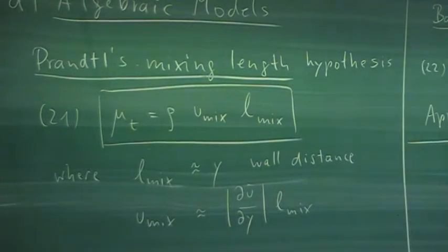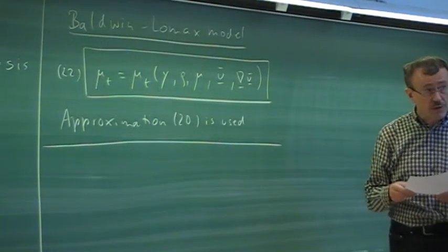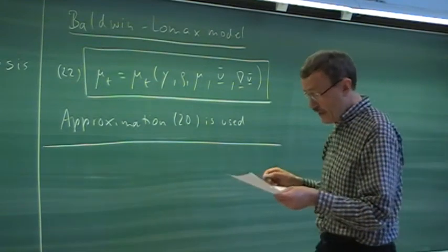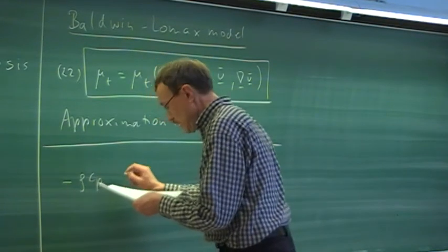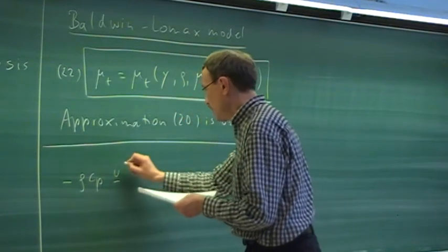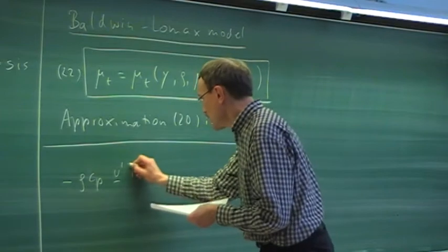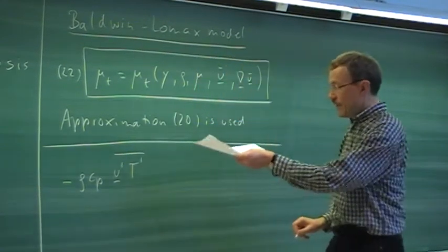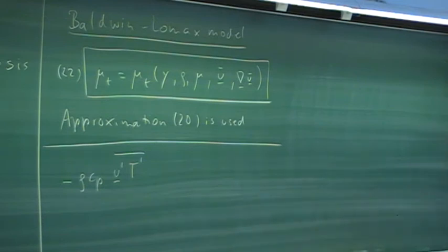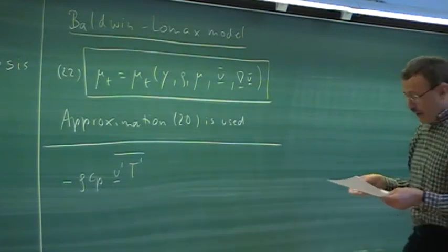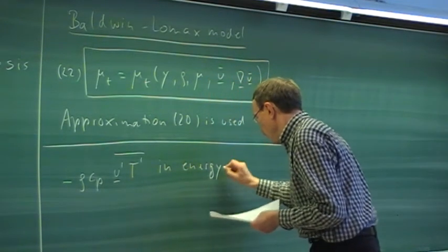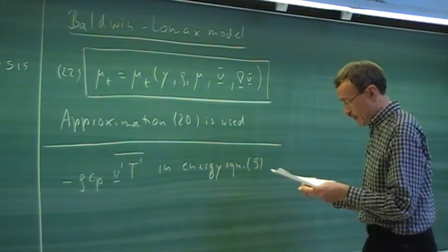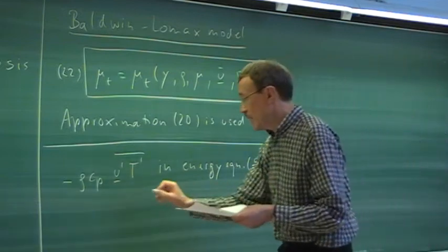Now we want to look at the equation we have not yet considered: the energy equation. In the energy equation — equation 9 discussed yesterday — we had a term minus ρCp times the velocity fluctuation vector times the temperature fluctuation, time-averaged. That term appears in the conductive terms of the energy equation.